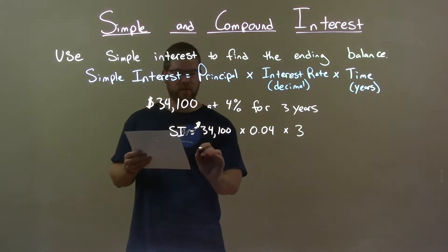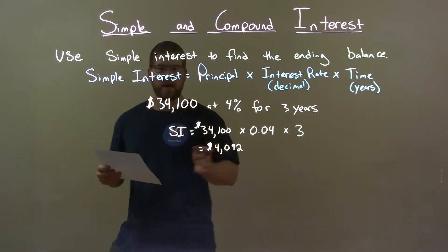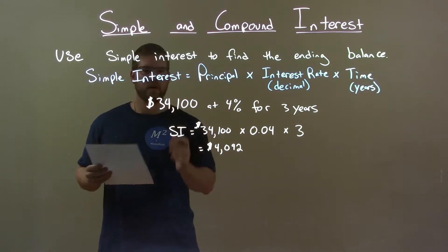That gives us a value of $4,092. Now, to get the ending balance, we add that to our initial principal.